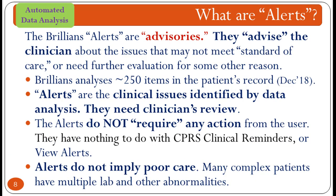What are alerts? The Brilliance alerts are advisories. They advise the clinician about the issues that may not meet standard of care or need further evaluation for some other reason. Brilliance analyzes about 250 items in the patient's record. Alerts are the clinical issues identified by data analysis — they need clinician's review. Here is an important tip: the alerts do not require any action from the user. They have nothing to do with CPRS clinical reminders or view alerts.